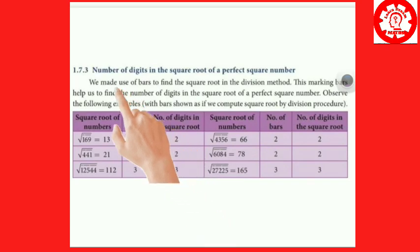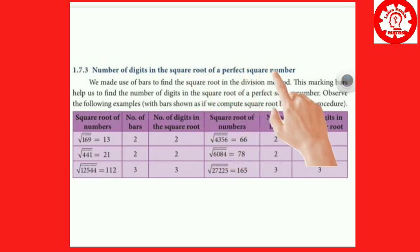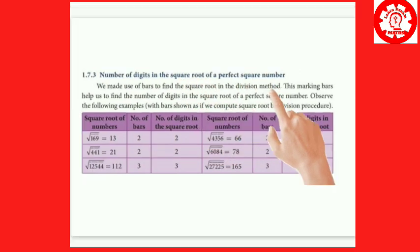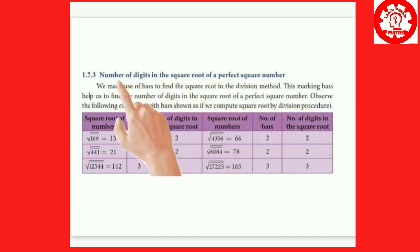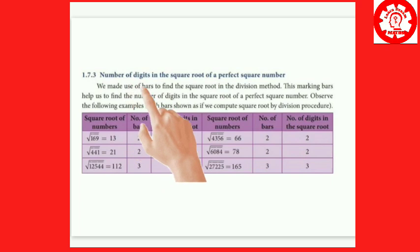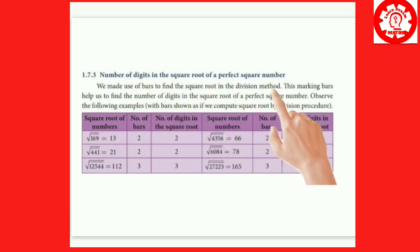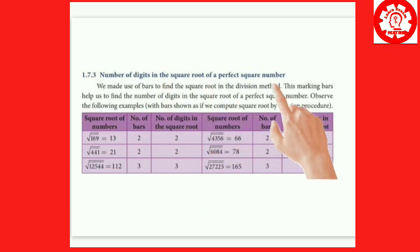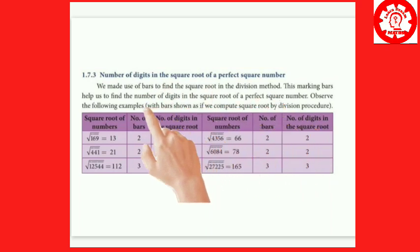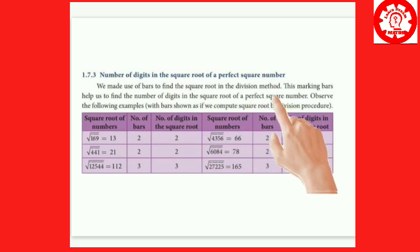This is the concept of the number of digits in the square root of a perfect square number. We make use of bars to find the square root in the long division method. This marking with bars helps us to find the number of digits in the square root of a perfect square number.